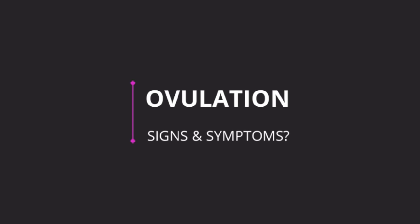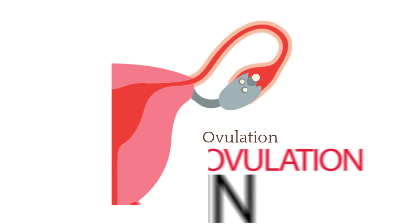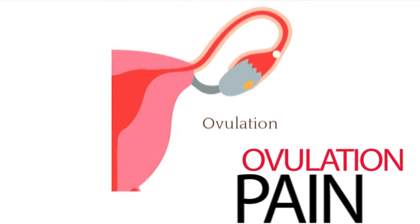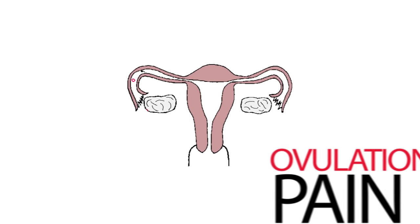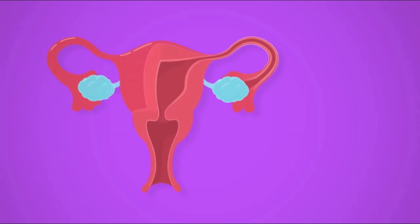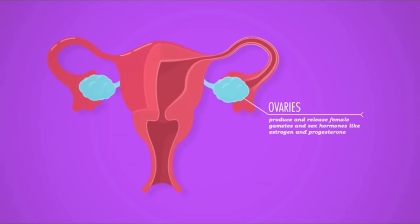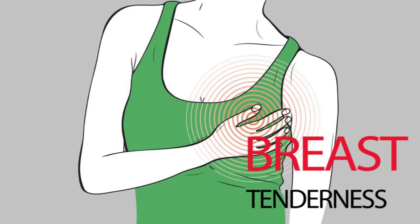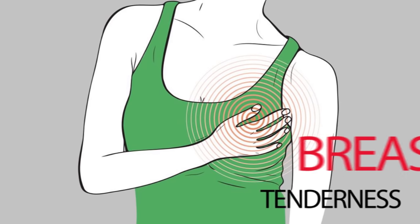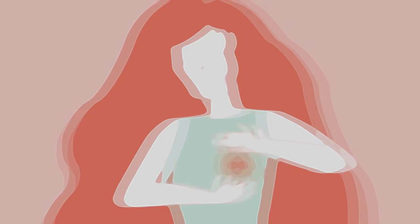Ovulation signs and symptoms — ovulation pain: cramps or pain may be experienced by 20% of women, occasionally and not in every cycle. This mild pain is experienced as the egg ruptures and is released by the ovary. It can be the left or the right ovary, depending upon which ovary releases the egg. Breast tenderness is another symptom that can be experienced right before or after you ovulate in response to the progesterone hormone.